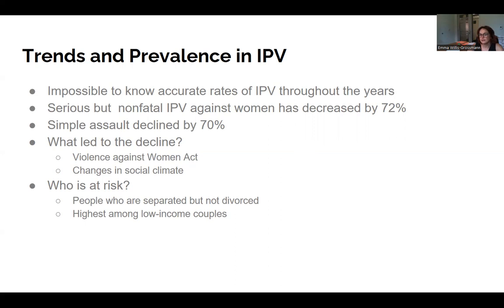A few things have led to this decline. The first was the Violence Against Women Act, passed in the 1990s, which was also pushed forward by the feminist movement. It provided sensitivity training on interpersonal violence for police and funded legal services for victims, such as victim advocates. The social climate has also changed — overall, society disapproves of IPV, which decreases chances of abuse and teaches people from a young age that it's not acceptable behavior.